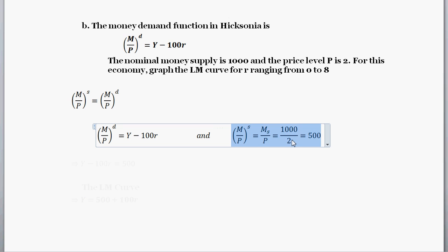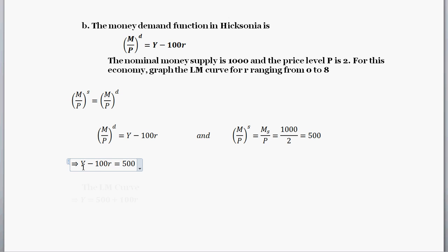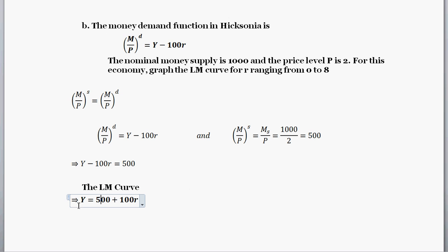The money supply is M over P — and the superscript S just denotes supply, not an exponent. The nominal money supply is 1000 and the price level is 2, so the real money supply equals 500. Setting money demand equal to money supply, we have Y minus 100R equals 500. Simplifying, we get the LM curve: Y equals 500 plus 100R.